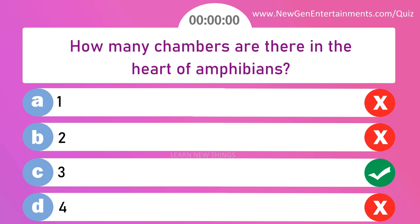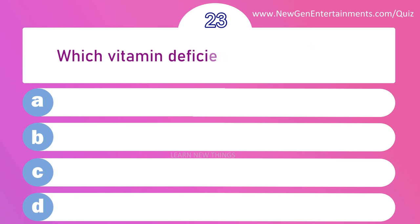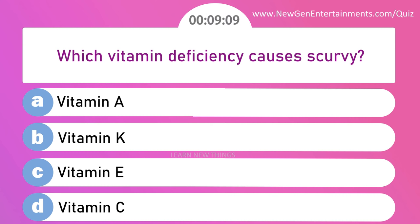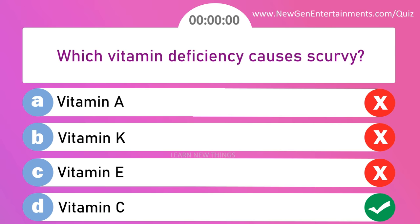Which vitamin deficiency causes scurvy? Options are: A) Vitamin A, B) Vitamin K, C) Vitamin E, and D) Vitamin C. Answer is option D: Vitamin C.